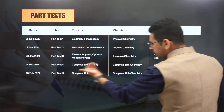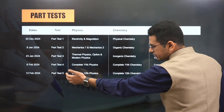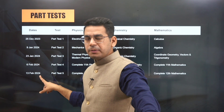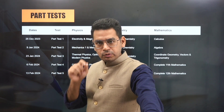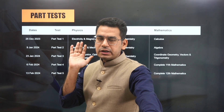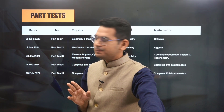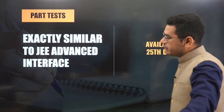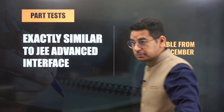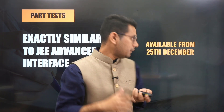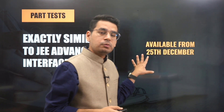Part test 4 will cover complete 11th Physics and Chemistry, and part test 5 will be complete Class 12th. They will be available on specific dates, but once uploaded, you can take them at any point in time. They will be based on the exact JEE Advanced interface so you get a better understanding of how the interface will look on the final day. They are available from 25th December as per the timelines.